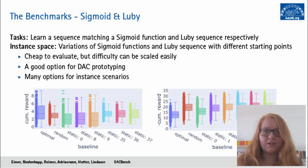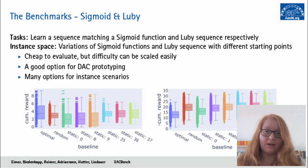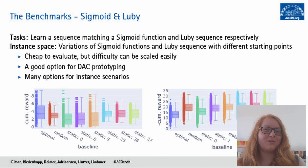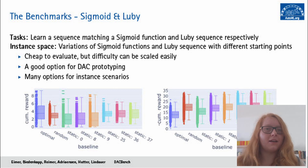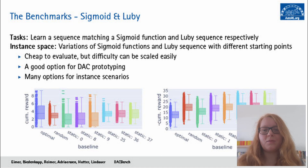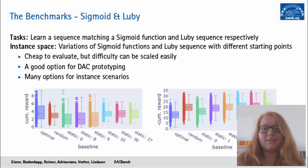On LUBY, the picture is a bit different. There is one static policy that is much better than the rest — that's of course the first element of the Luby sequence, because we always want to start with that. But the rest, along with the dynamic random policy, are quite bad compared to the optimal policy; the distance in the mean is much larger. So this is actually a harder benchmark that requires less generalization and is simply more difficult in the base case.